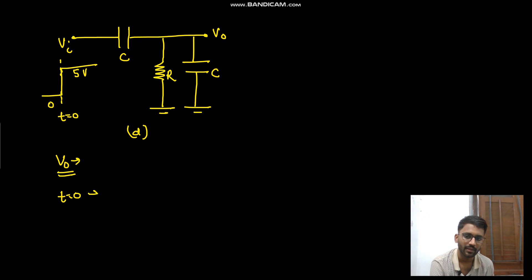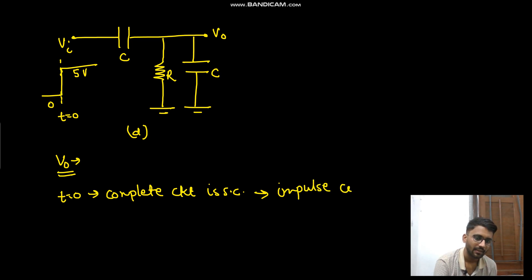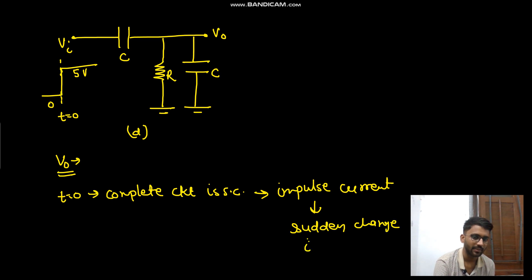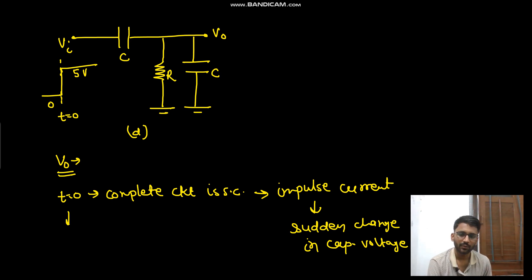At t equals to zero, what will happen? The complete circuit is short circuited. Because of that there is impulse current, and if there is impulse current, there will be a sudden change in capacitor voltage. That concept I have already taught in the previous video.